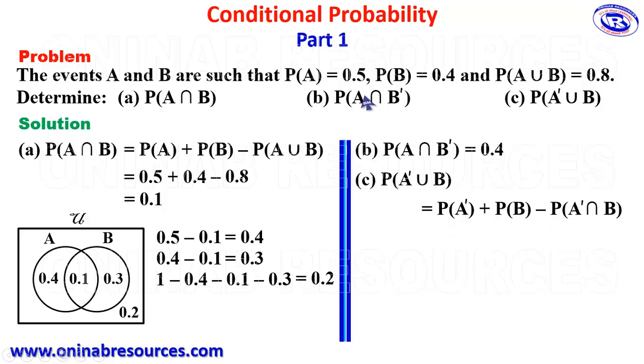Then P of A prime. Since P of A is 0.5, P of A prime is 1 minus 0.5, and that still gives 0.5. Then P of B is given to us as 0.4 minus P of A prime intersection B. From the Venn diagram, A prime intersection B is this region, which is B only. And that gives 0.5 plus 0.4 minus 0.3 gives 0.6. And that represents P of A prime union B.